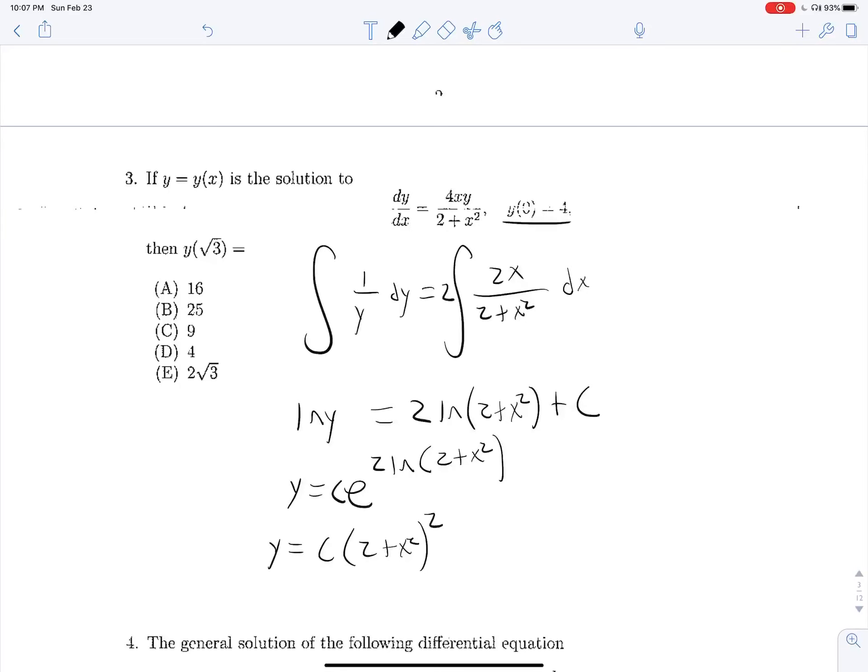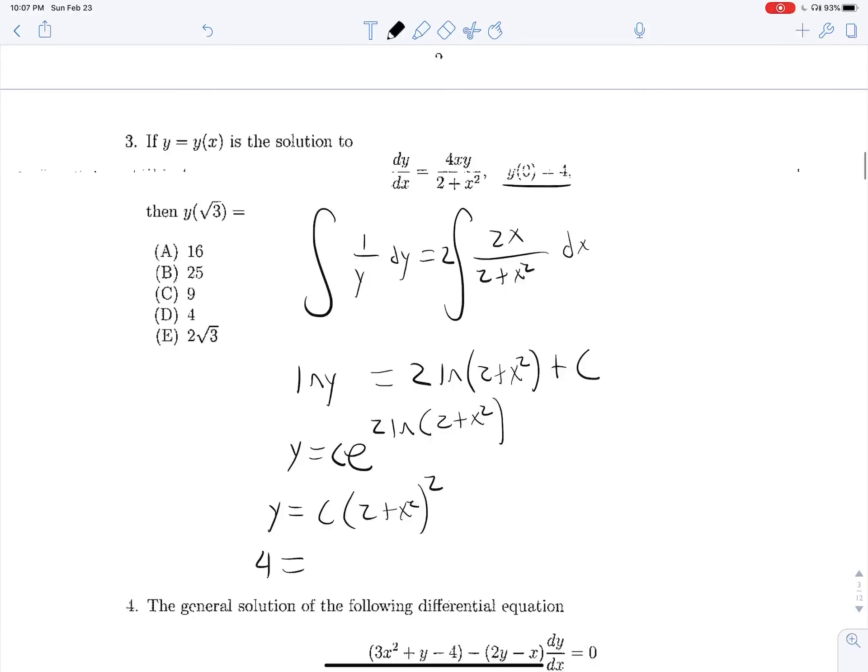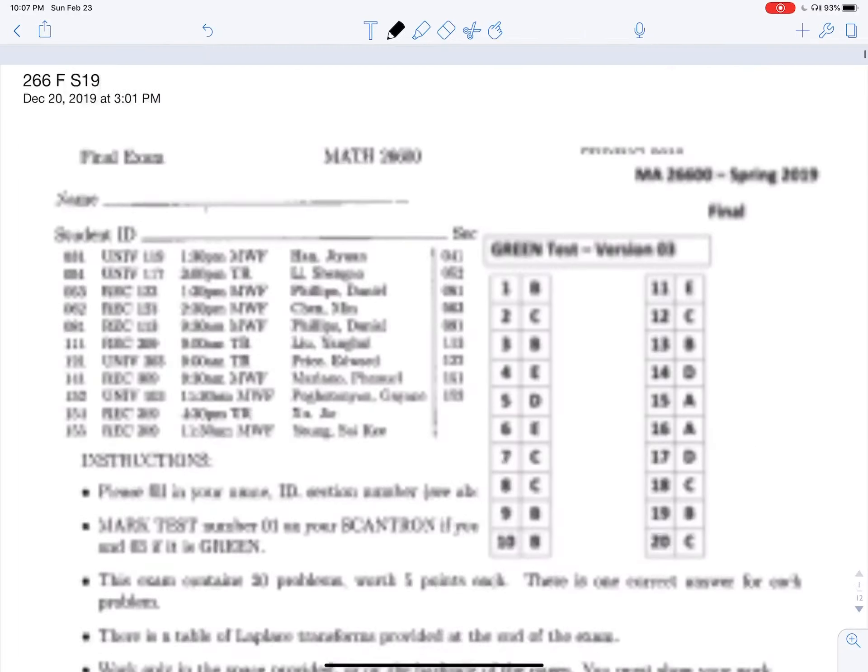We know that y at 0 is equal to 4, so we can plug that in. 4 is equal to c times 2 squared. That means c is equal to 1, and we can solve for y equals root 3. So y is equal to 2 plus root 3 squared, so 3 squared, and that's 25. 3 is b.